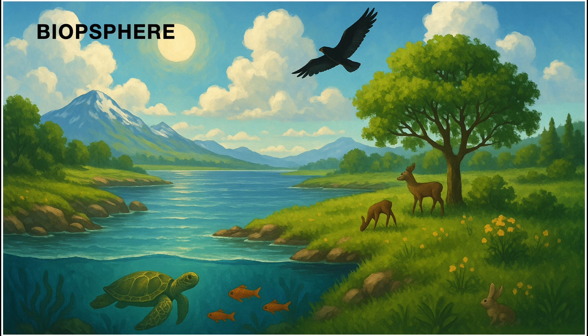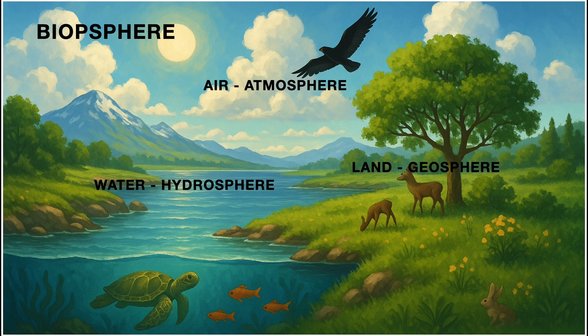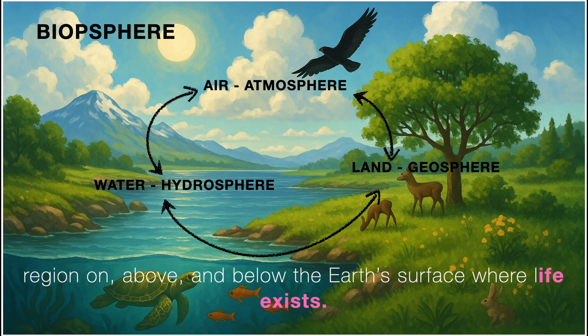First, we need to understand the playground of all life — the biosphere. It's the thin outer layer of Earth where all living things exist: air in the atmosphere, land in the geosphere, water in the hydrosphere, and all of these are working together. The biosphere is defined as the region on, above, and below the Earth's surface where life exists.